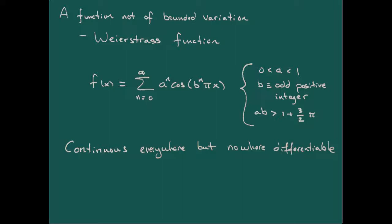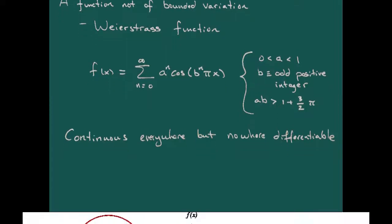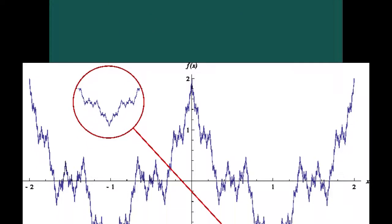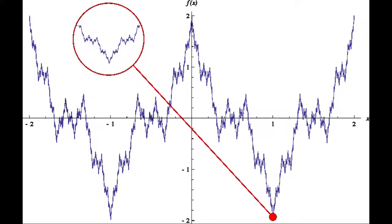And here's Weierstrass' example of one of these functions. Now to actually see that it's not going to be a function of bounded variation, for one thing we can take a look at the graph. Here's an example of the graph that we see from Wikipedia. It's pretty obvious that this thing is really very fractal-like in nature and its structure.